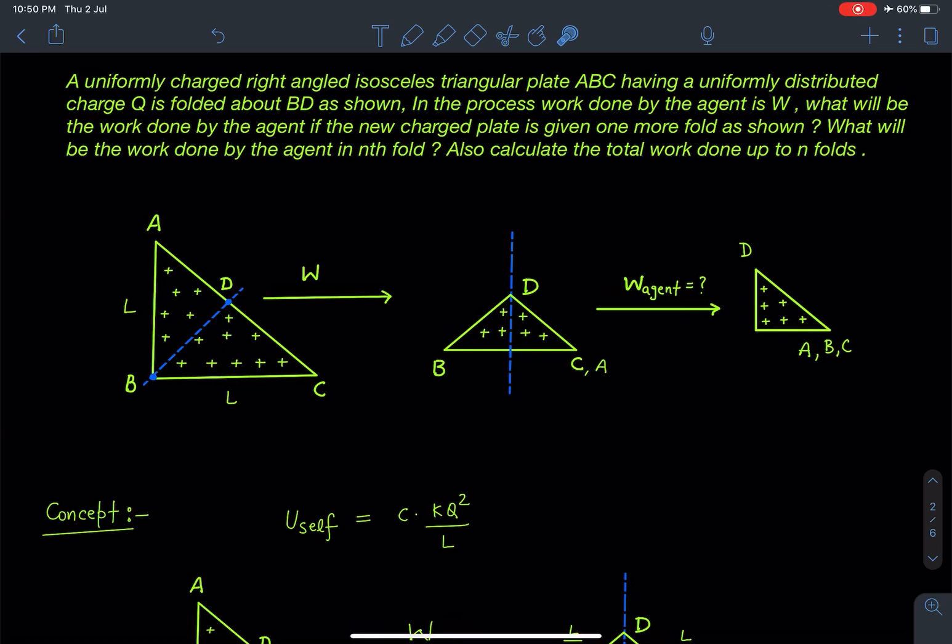And also we have to calculate the total work done up to n folds. So this is the statement of this problem. As you can see here, there is an isosceles right angle triangle of side length L and there is a line BD, this blue color line BD, about which we are folding it. So we are obtaining another plate.